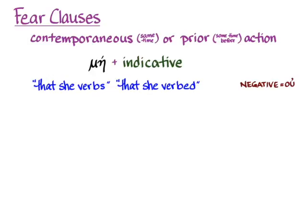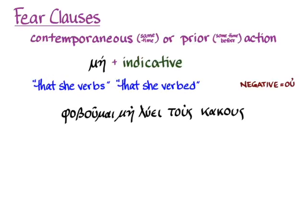Here's an example with the indicative: φοβοῦμαι μή λύει τοὺς κακούς. Here we have λύει in the present indicative active, meaning 'I am afraid that she is freeing the bad men.'